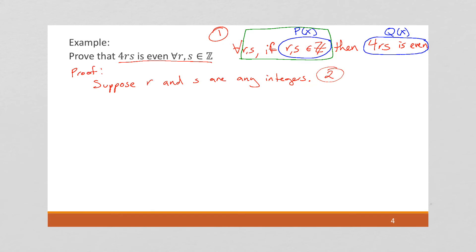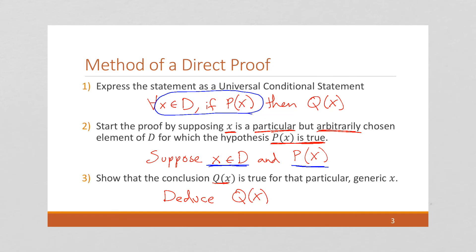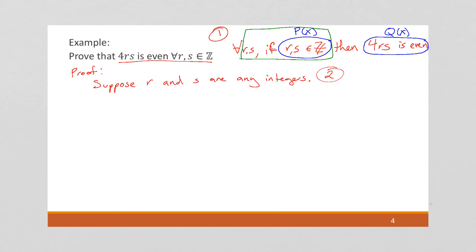What's our goal? Well, let's take a look. Our goal is to deduce q of x, to show that q of x is true, given this assumption. So we want to show that 4rs is even. That's our goal. Step one. Step two. If we can accomplish our goal, we'll have done step three.